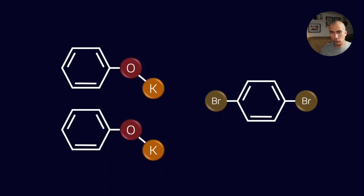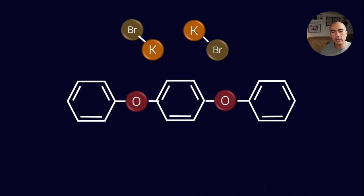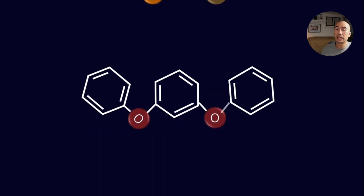So, first of all, these molecules are generally formed by a reaction known as Ullman Ether Synthesis. You don't really need to know the details about it. Basically, it's a copper-catalyzed reaction where we react an alkali phenate with an aromatic halogen. And what you get is a molecule that looks something like this.